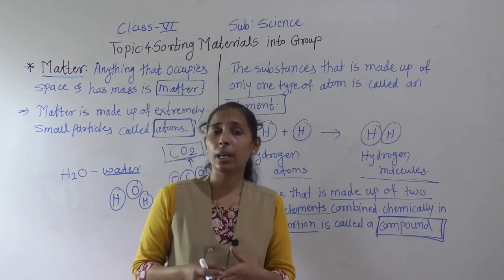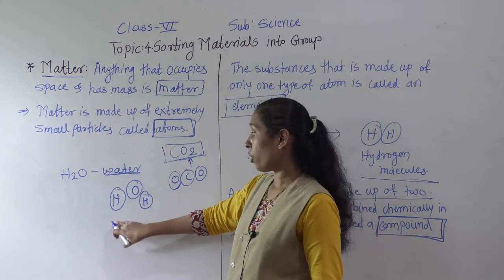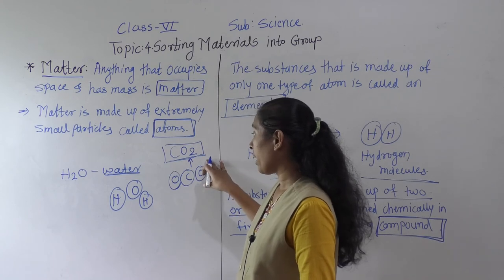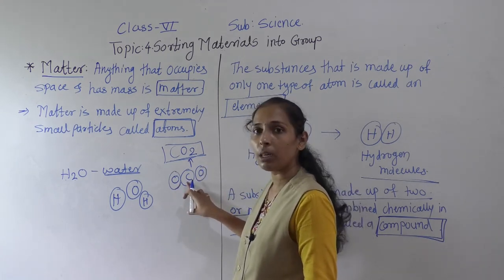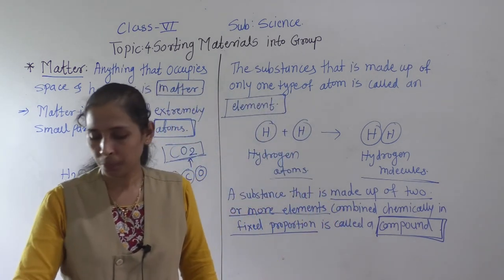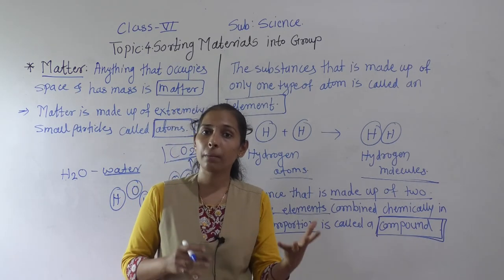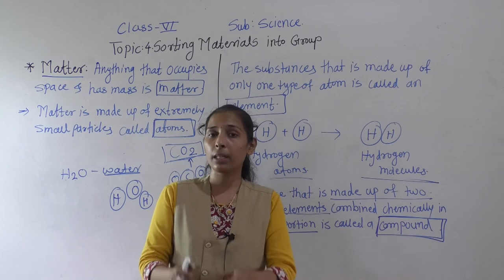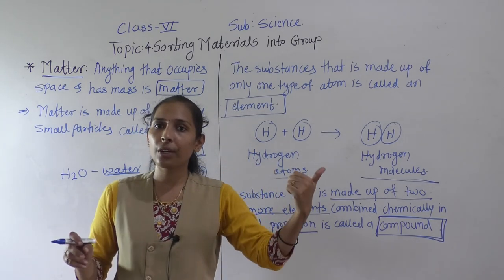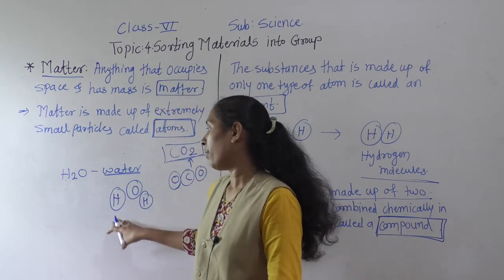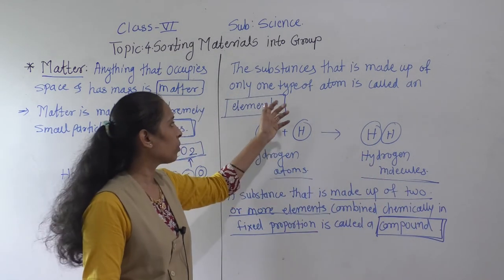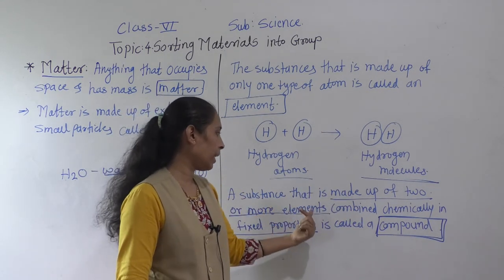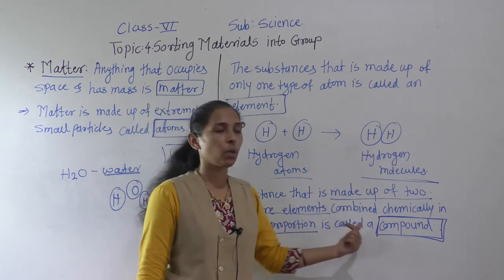There are many examples of compounds. Water is made up of two atoms of hydrogen and one atom of oxygen, so water is a compound. Carbon dioxide is made up of two atoms of oxygen and one atom of carbon, so carbon dioxide is also a compound. Common salt is made up of sodium and chlorine. Sugar is made up of carbon, hydrogen, and oxygen. When different types of atoms come together, they form a compound; when the same type comes together, they form an element.